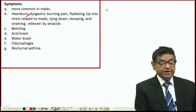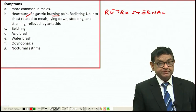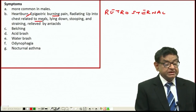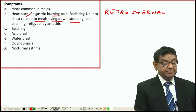The most common symptom is heartburn. Patients complain of retrosternal pain which is burning in character, radiating up to the chest, especially related to meals. It's very common after meals and when lying down, especially after meals, stooping and straining.